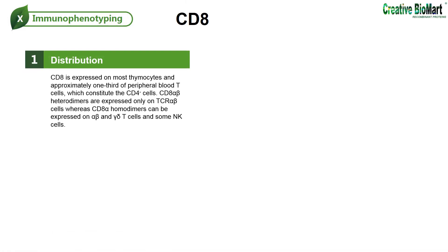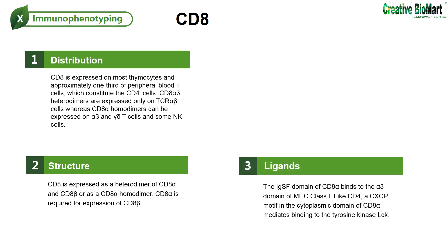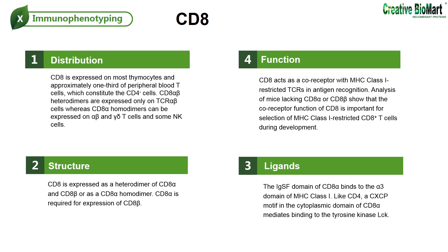CD8 is expressed on most thymocytes and approximately one-third of peripheral blood T-cells, which constitute the CD4-minus cells. CD8-alpha-beta heterodimers are expressed only on TCR-alpha-beta cells, whereas CD8-alpha homodimers can be expressed on alpha-beta and gamma-delta T-cells and some NK cells. CD8 is expressed as a heterodimer of CD8-alpha and CD8-beta, or as a CD8-alpha homodimer. CD8-alpha is required for expression of CD8-beta. The IGSF domain of CD8-alpha binds to the alpha-3 domain of MHC class 1. Like CD4, a CXCP motif in the cytoplasmic domain of CD8-alpha mediates binding to the tyrosine kinase LCK. CD8 acts as a coreceptor with MHC class 1 restricted TCRs in antigen recognition. Analysis of mice lacking CD8-alpha or CD8-beta shows that the coreceptor function of CD8 is important for selection of MHC class 1 restricted CD8-plus T cells.